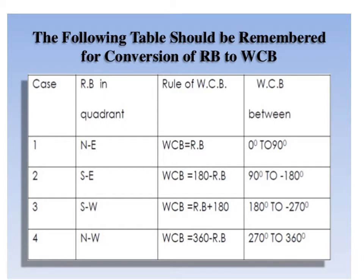Case 2: where the line lies in the south-east quadrant, the value of WCB is calculated as 180 degrees minus reduced bearing, giving a WCB value ranging from 90 degrees to 180 degrees. Case 3: for a line in the south-west quadrant, WCB is equal to reduced bearing plus 180 degrees, and the range of WCB is between 180 to 270 degrees.